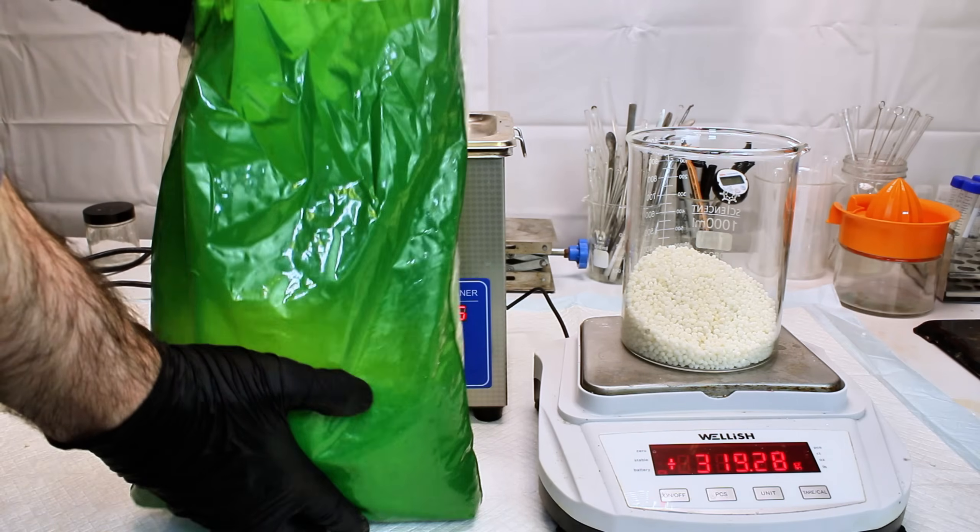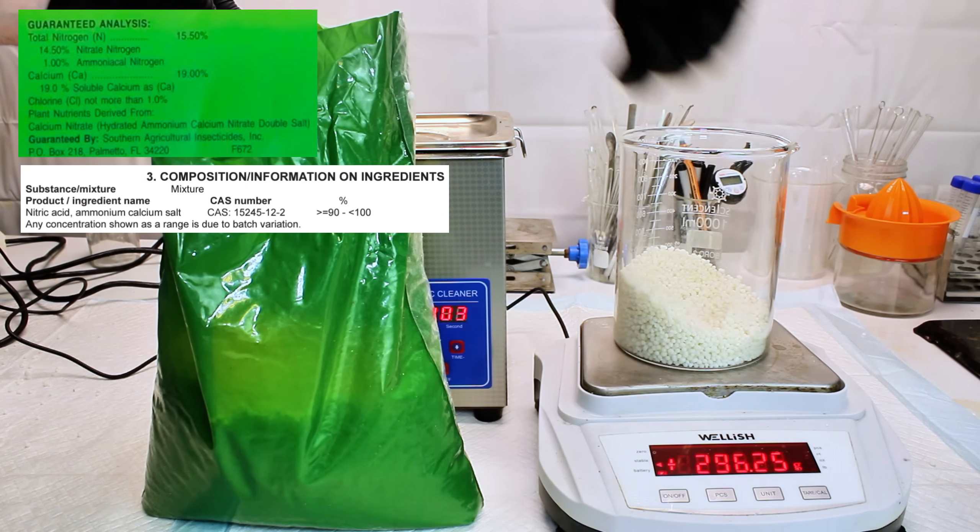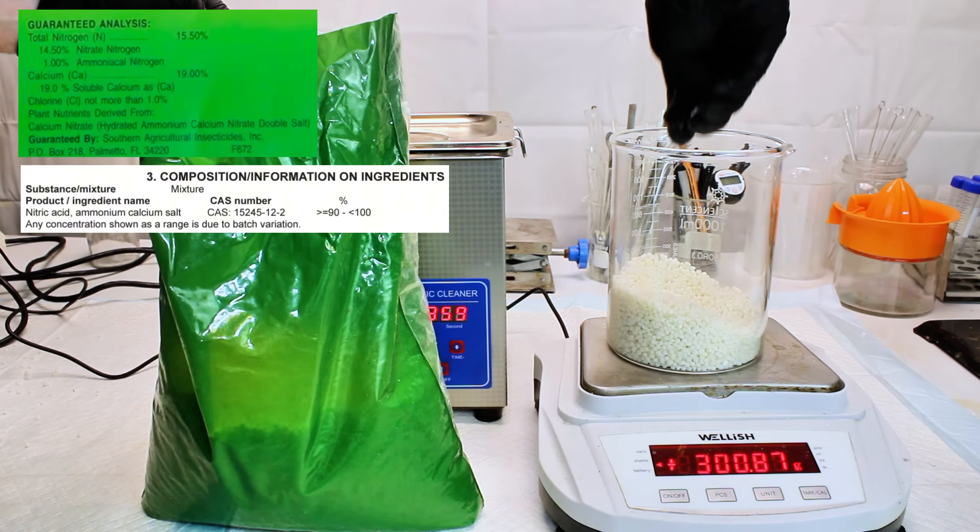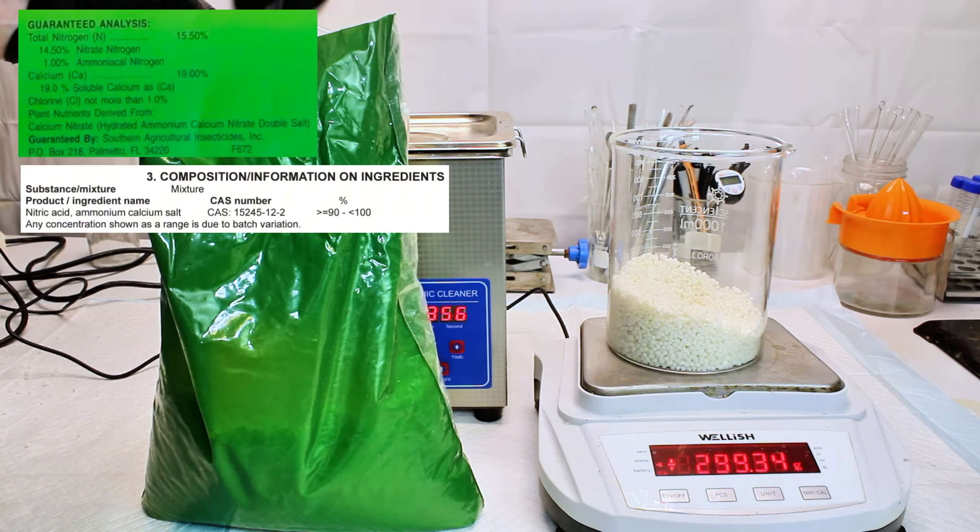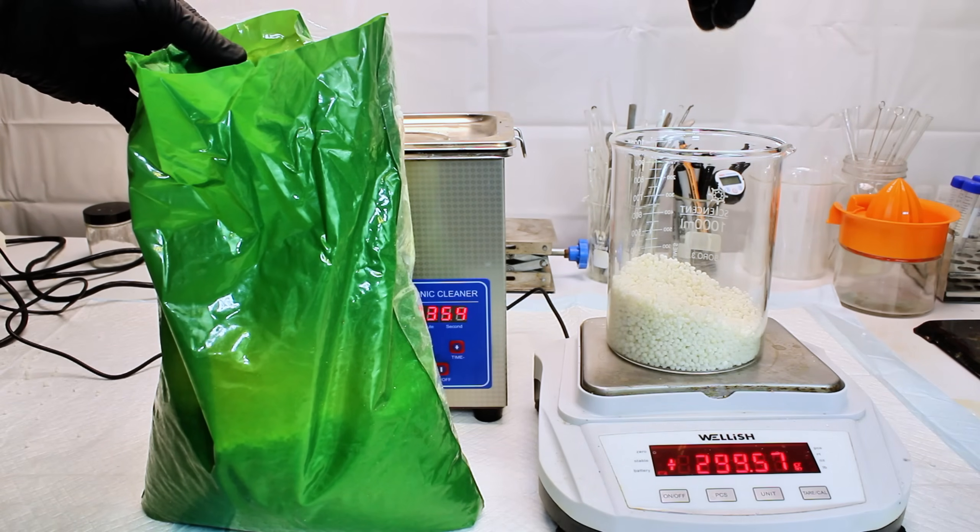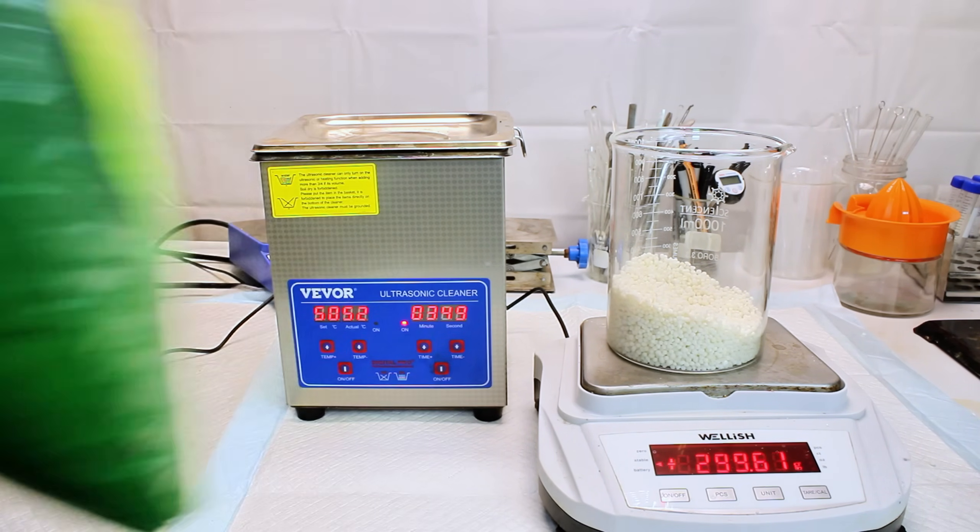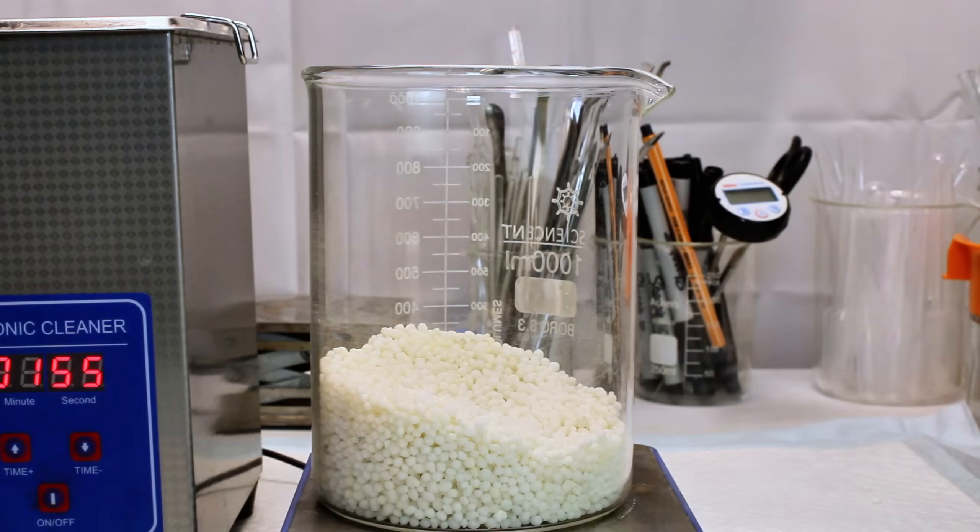If you look closely at the label or on the manufacturer's website, you can see that this product is actually something called calcium ammonium nitrate, or CAN for short. Calcium ammonium nitrate is vastly preferred in fertilizers, as pure calcium nitrate is extremely hygroscopic and nearly impossible to crystallize.